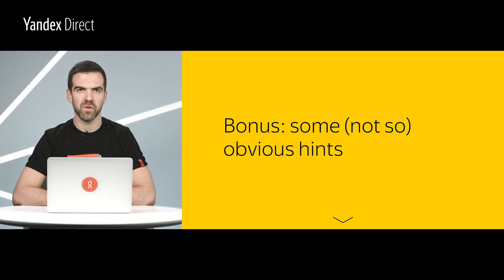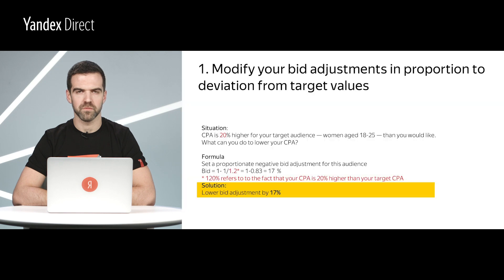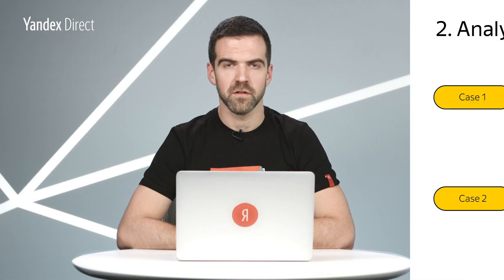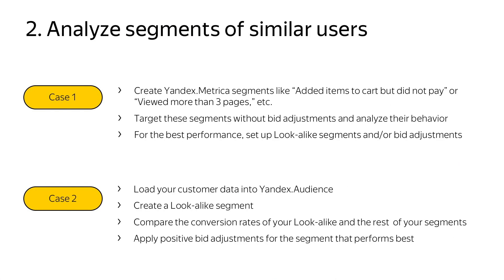But that's not all — we've got some bonus material for you. Modify your bid adjustments in proportion to deviation from target values. For example, if CPA for your target audience — women aged 18 to 25 — is 20% higher than the target value, use the formula shown to figure out which bid adjustment you should make. On this slide, you can see two examples of how you can use segments of similar users.